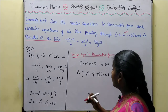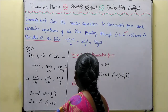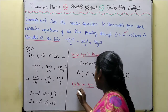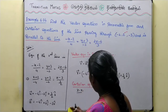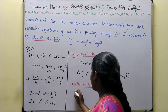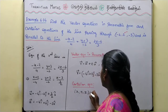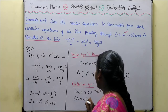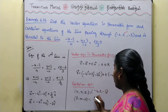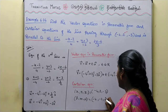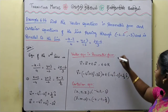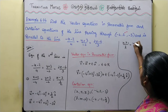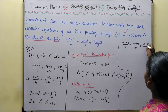Now we get the Cartesian equation. The formula is: (x - x1)/l = (y - y1)/m = (z - z1)/n. The point (x1, y1, z1) is (-4, 2, -3), and the parallel vector components (l, m, n) are (-4, -2, 3/2).